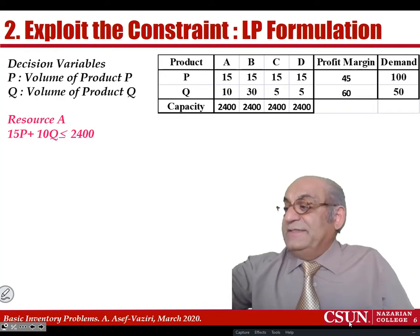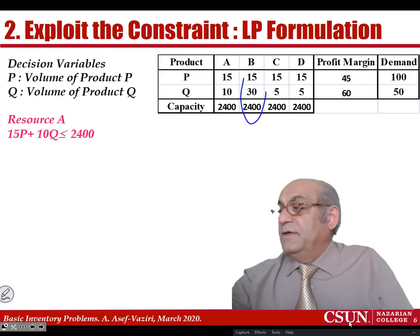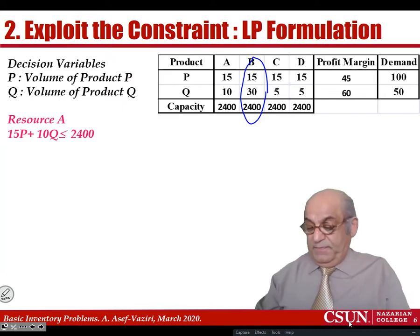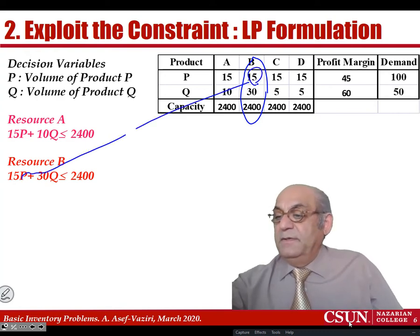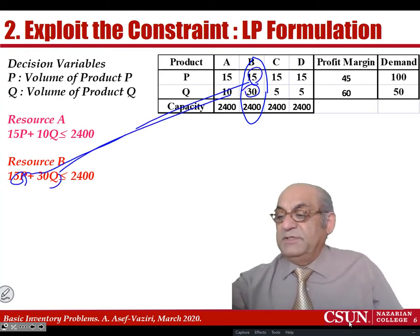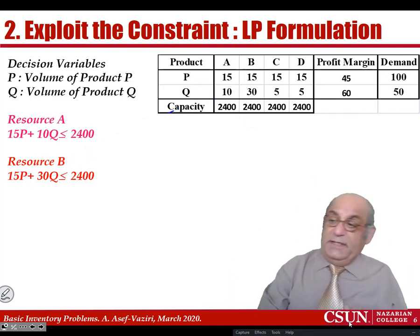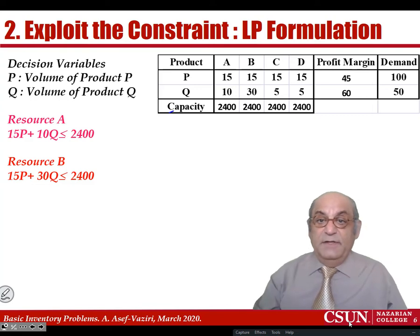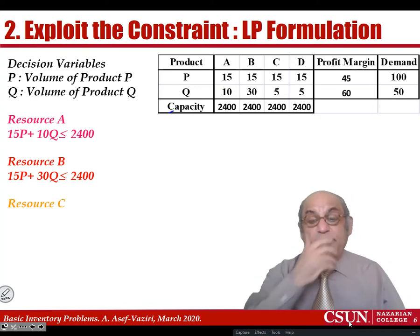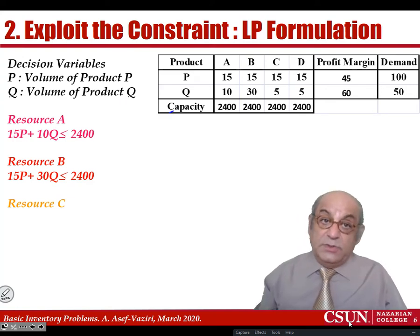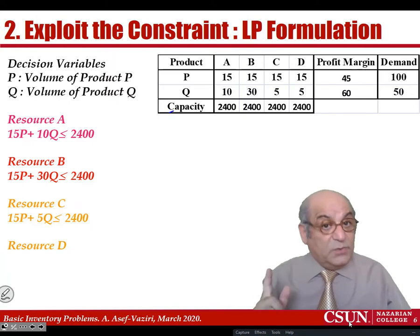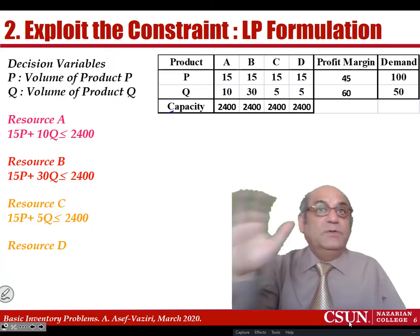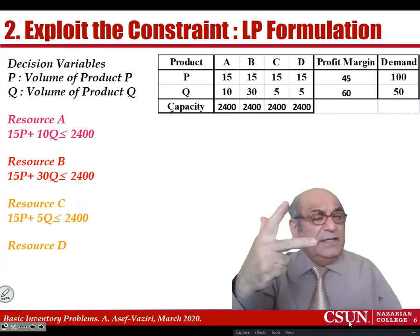Now I write the constraint for work center B: 15P + 30Q ≤ 2,400. The left-hand side is what I need; the right-hand side is what I have. For department C: 15P + 5Q ≤ 2,400. For department D: 15P + 5Q ≤ 2,400. In all these constraints, we have only less-than-or-equal, greater-than-or-equal, or equal — not strict inequalities.